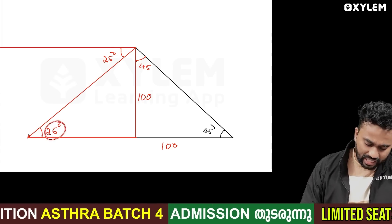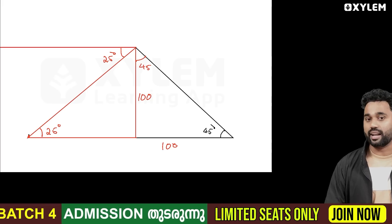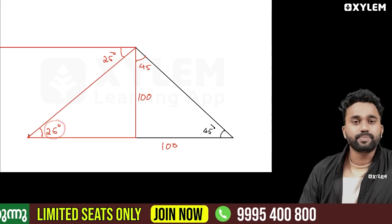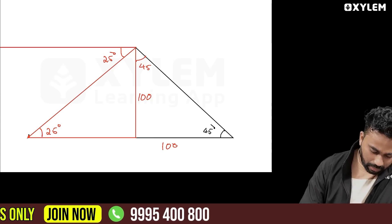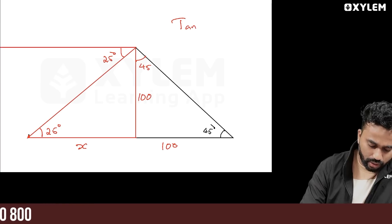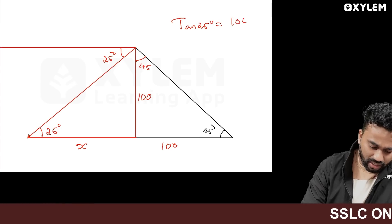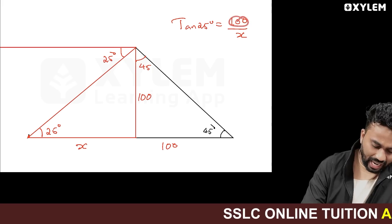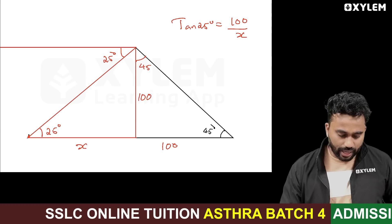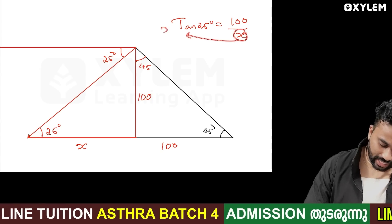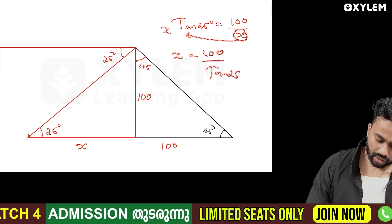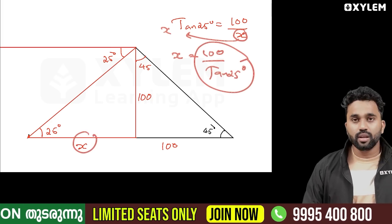The same angle — we have to answer. tan25 is equal to opposite over x. We have to solve for x.